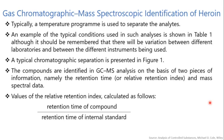Compounds are identified by GC-MS analysis on the basis of two pieces of information: the retention time or relative retention index, and the mass spectral data. The relative retention index is calculated as the retention time of the compound divided by the retention time of the reference standard, which gives the relative retention index for the given sample.